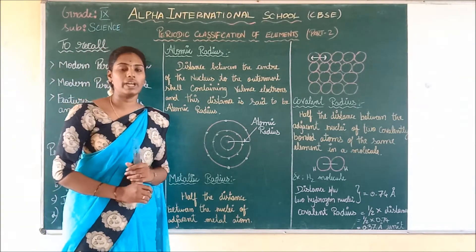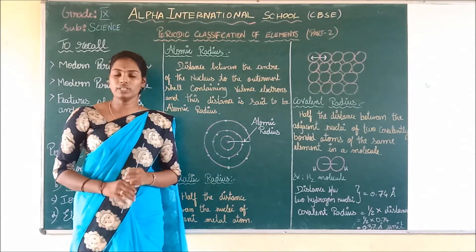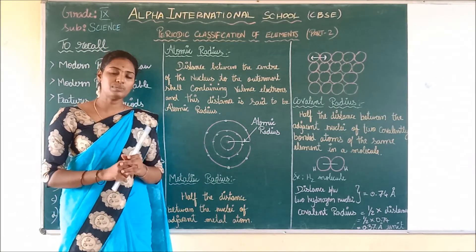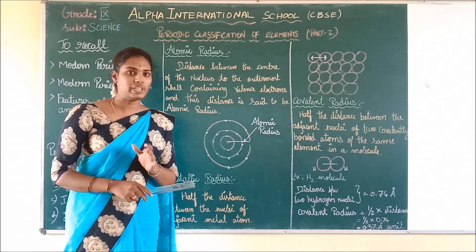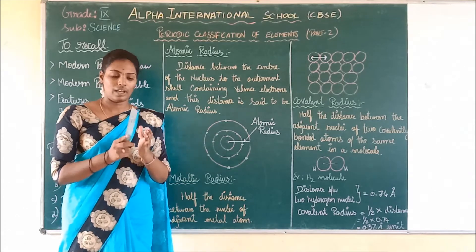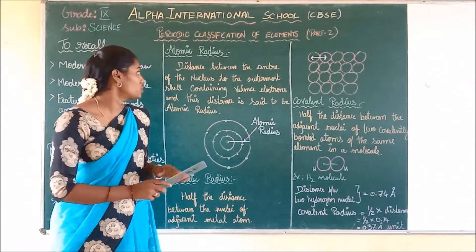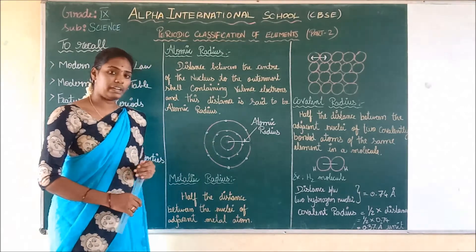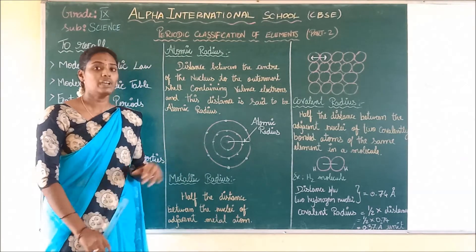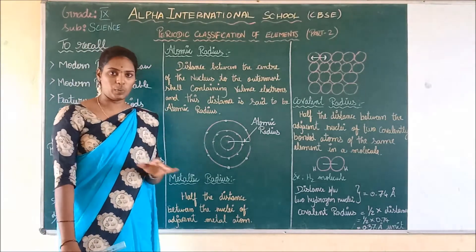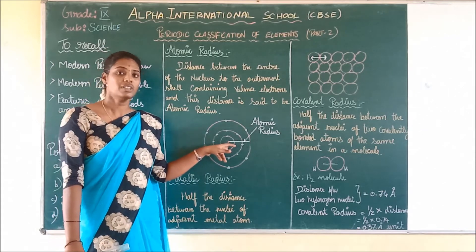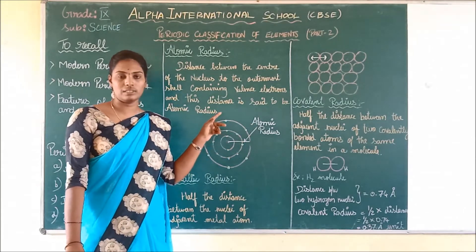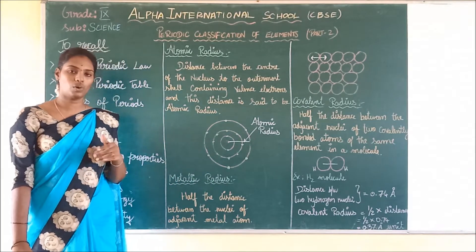Is it possible to find out the atomic radius of an isolated atom? No, it is not possible, because atoms are extremely small. So we cannot find out the atomic radius of an isolated atom. This atomic radius is referred to as either metallic radius or covalent radius.